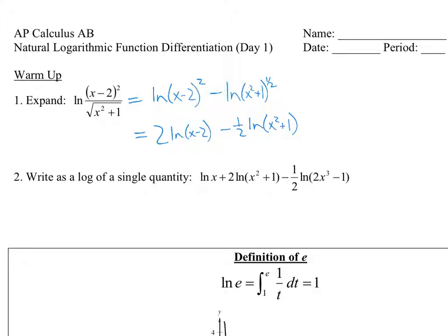Alright, let's say we wanted to put this one together all into one big log. So ln of something: x times (x²+1)² over √(2x³-1). So this comes in, that makes it a square root. The 2 comes in, that's where we get the square. The things that are added are on top, the things that are subtracted go on the bottom.